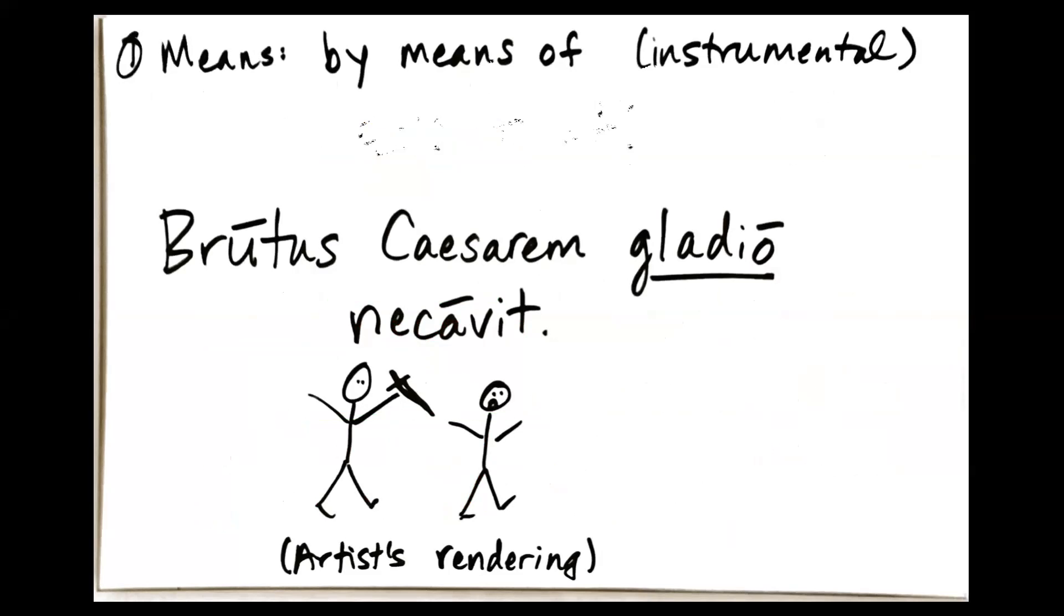Let's look at the first one, means, by means of, or instrumental. Even though we have the word with in English, you don't use a separate word to express with in Latin. With in the sense of by means of is contained in the ending of the ablative.